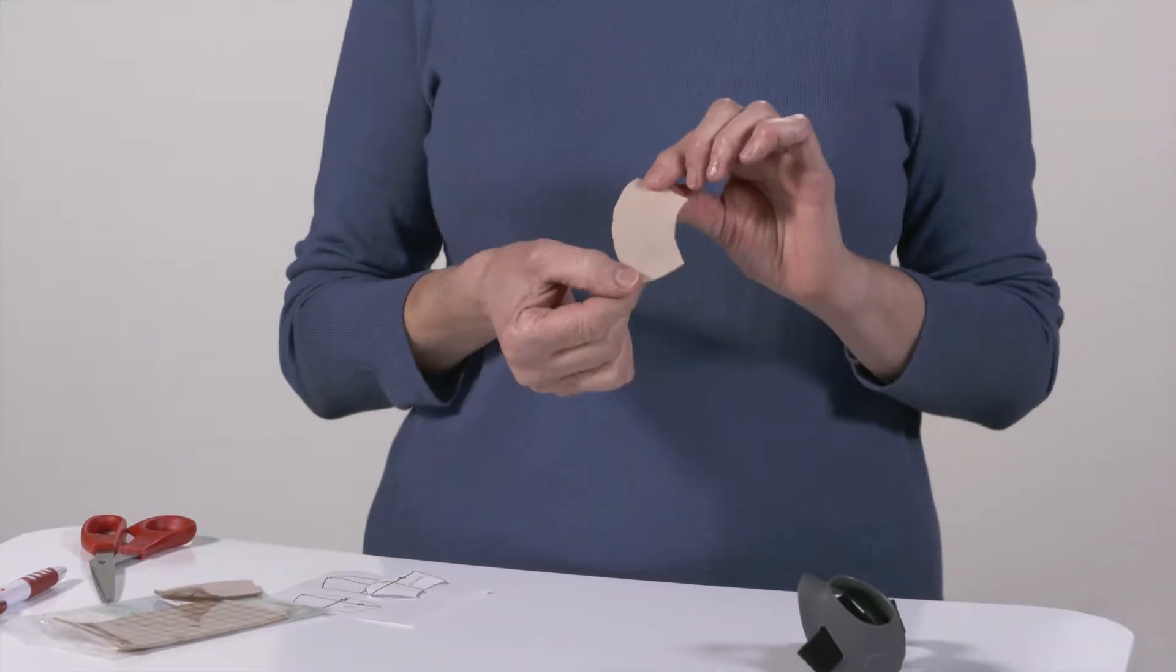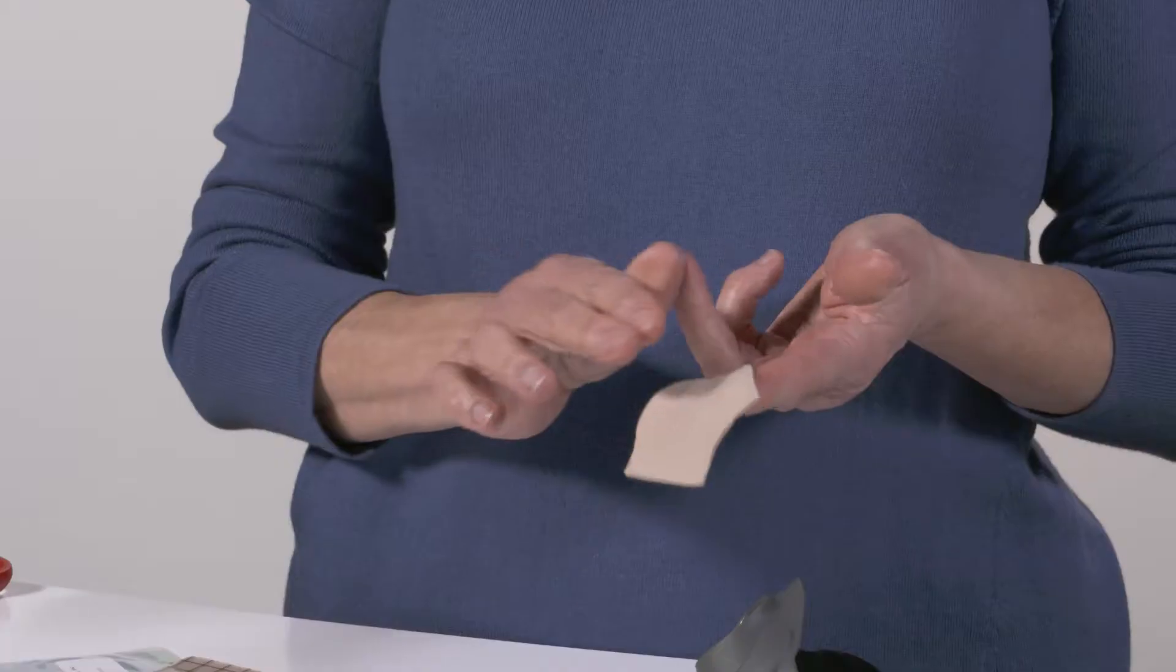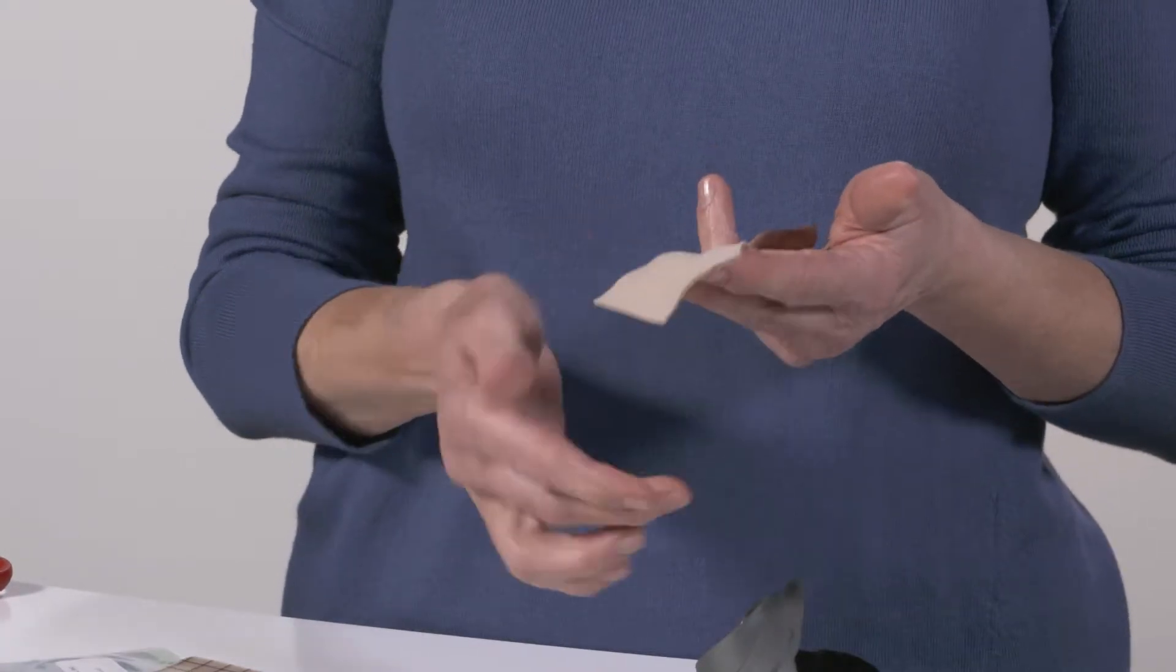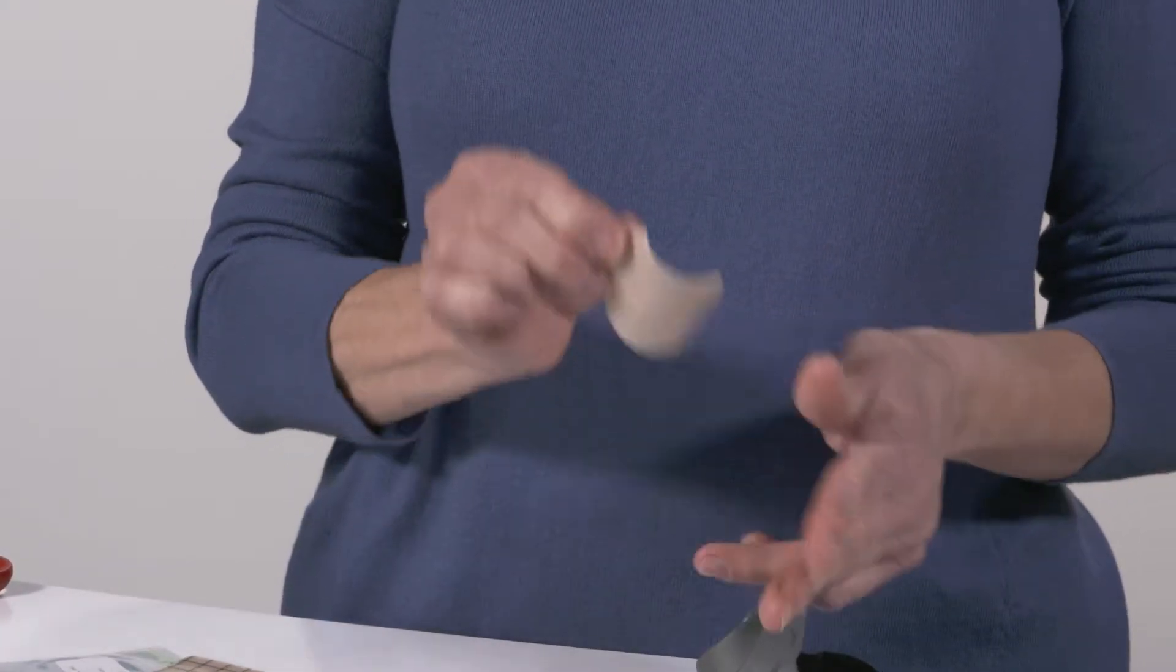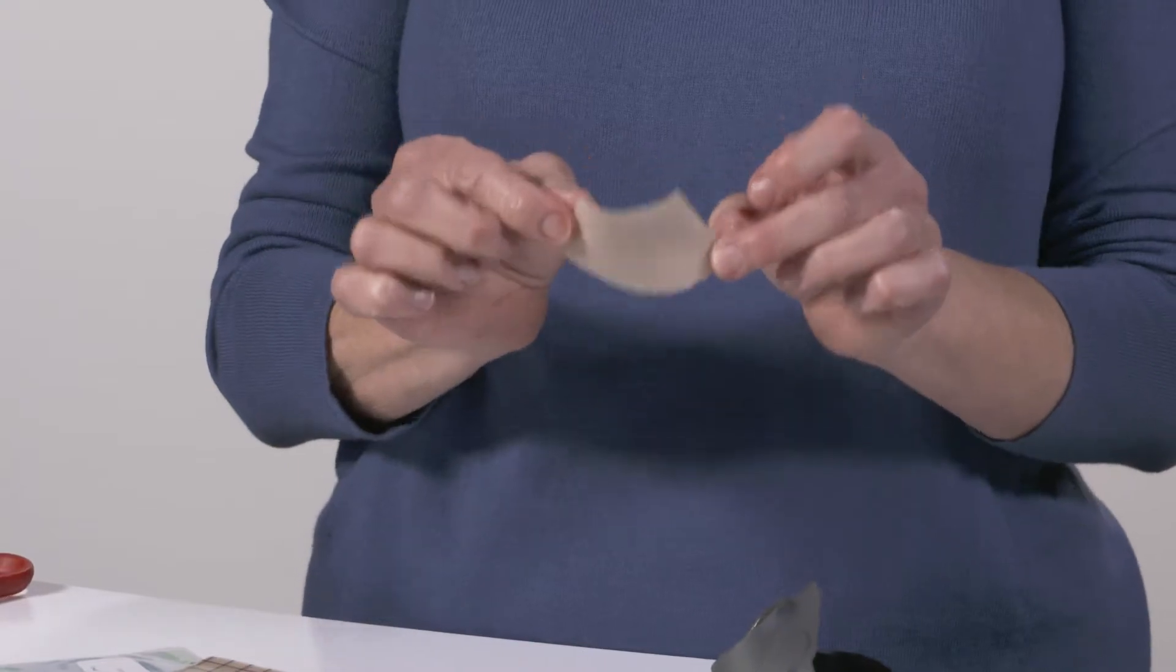GelMate silicone gel has a self-adherent gel on one side and a soft repellent fabric on the other side for a perfectly soft comfortable cushion.